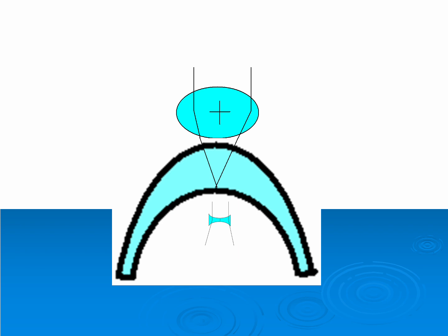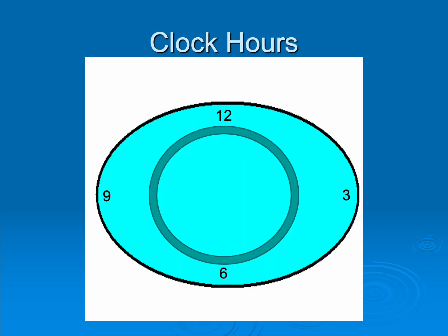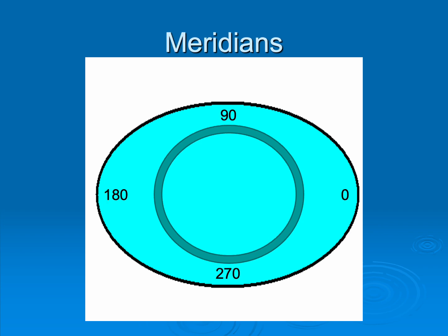Let's talk about the cornea optically. The cornea is a large plus lens on the front surface, and on the back surface it's a small minus lens. In ophthalmology, we love to pretend that the cornea is a clock so we can talk about where things are in terms of clock hours. We also talk about the oval cornea as a circle — clearly not a circle, but if we do, we can describe locations in terms of 360 degrees. We use the term meridian for this.